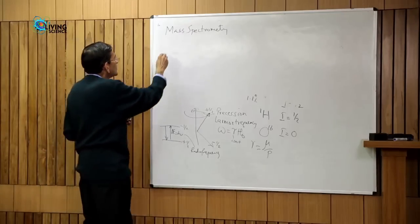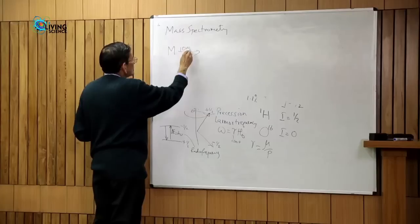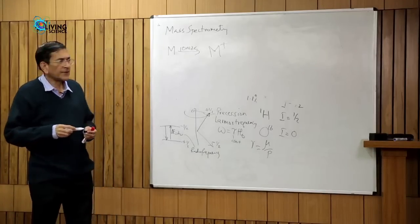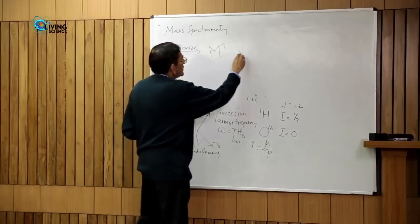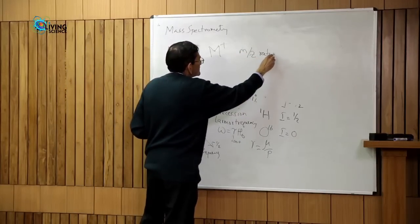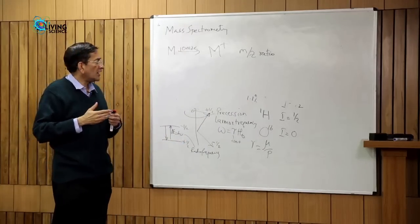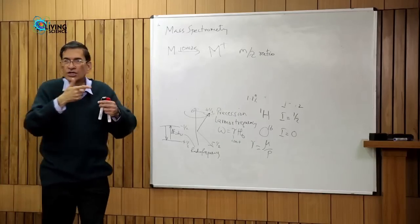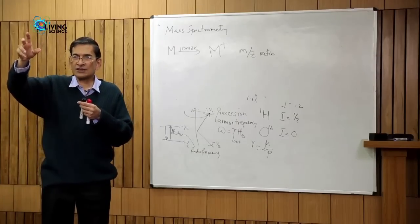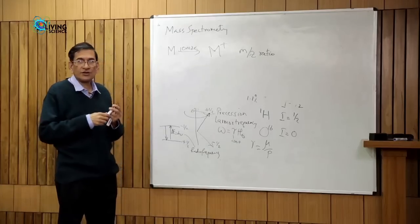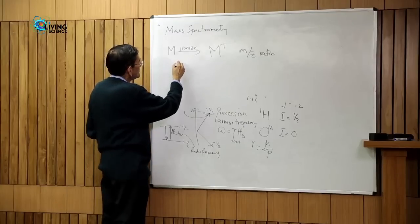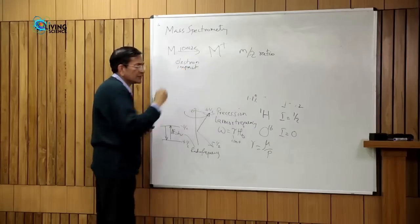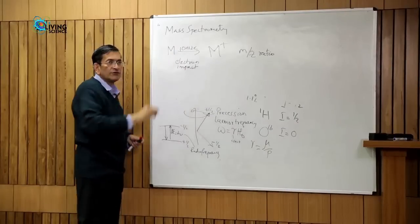The way you measure the mass of a molecule is to take the molecule, ionize it, and put a positive charge on it. After that you detect the mass-to-charge ratio. One way of ionizing a molecule is to hit it with electrons, in which case an electron might get ejected, giving you M⁺ because one electron has been knocked out. This is called electron impact ionization.